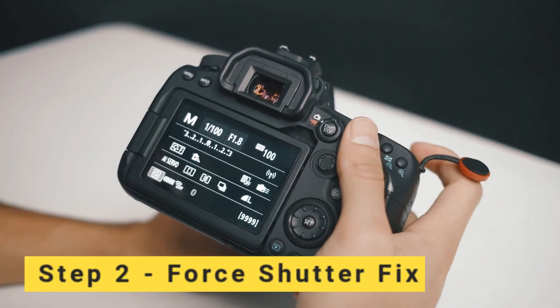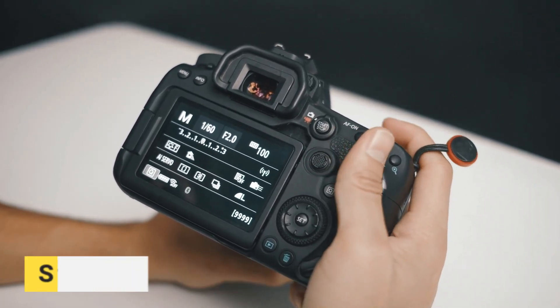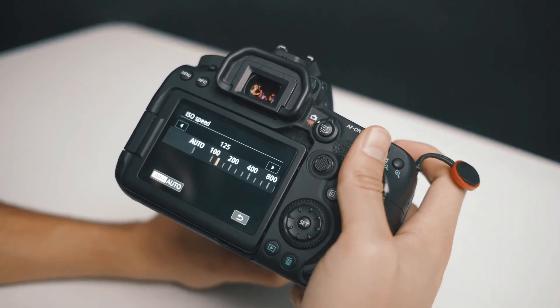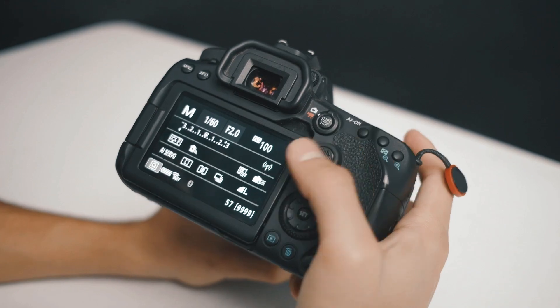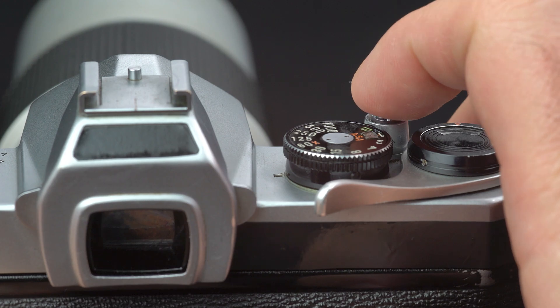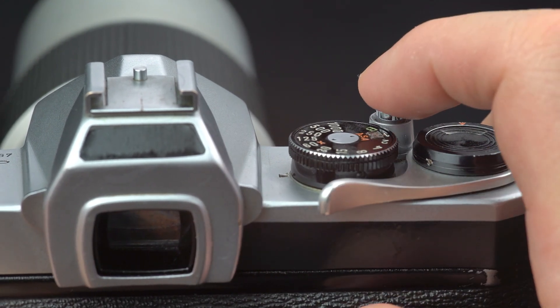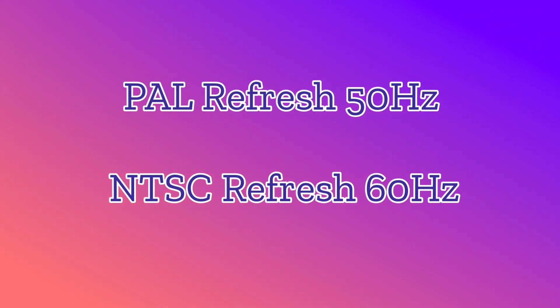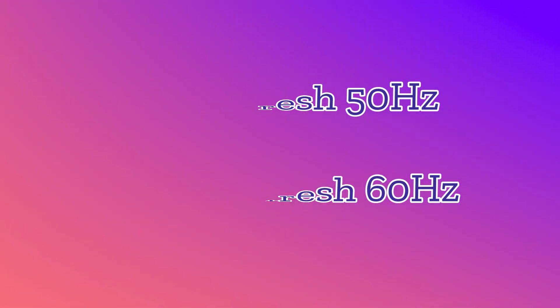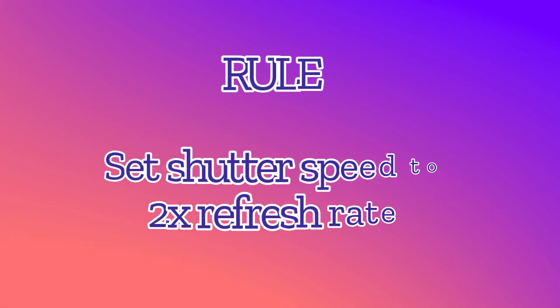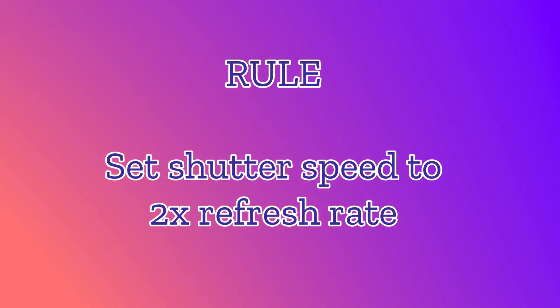If the problem is not solved, then what we're going to do next is force fix it with shutter speed, by syncing the shutter speed to match the frequency of the light refresh. We're going to do this in a mode appropriate to be able to set the shutter speed, such as pro mode. I live in the PAL region, so the refresh rate for the lights is 50Hz. So I need to set the shutter speed to double the refresh rate, so 1 over 100.